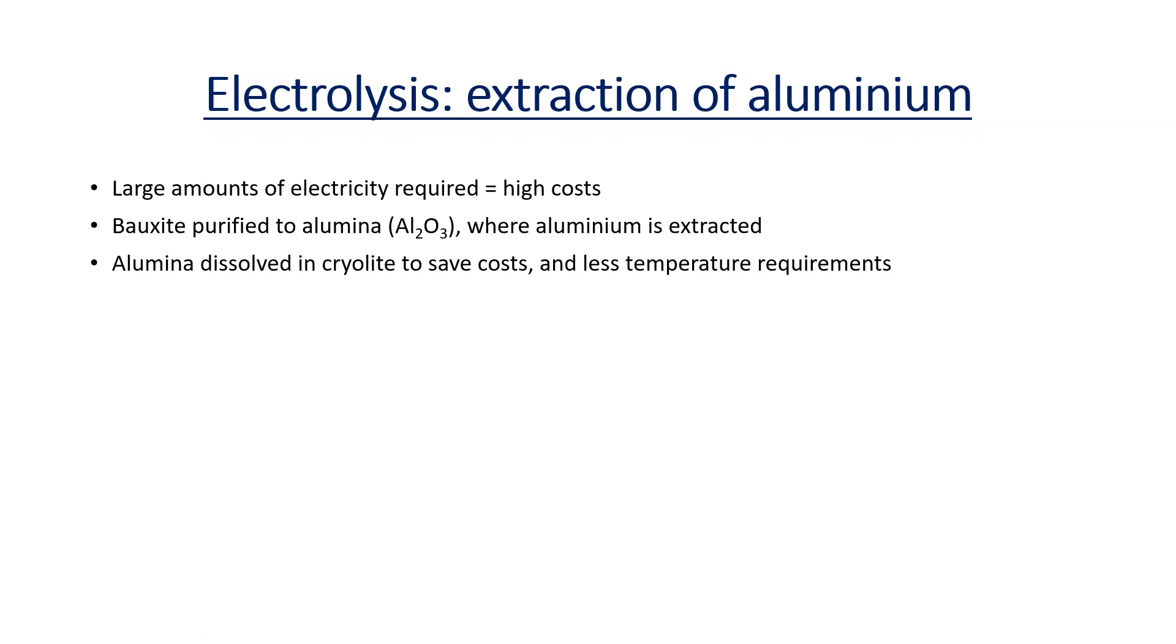It's dissolved in cryolite. This is because cryolite has a lower melting point than aluminium oxide which helps lower some of the costs as there will be less heat energy required, less temperature requirements. It's dissolved in molten cryolite I should add. And the electrolysis of aluminium uses graphite electrodes or carbon electrodes as they are inert and they're very unlikely to react with the molten mixture. And of course, redox occurs.